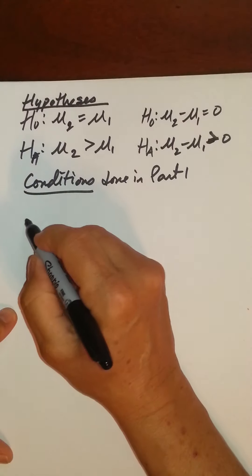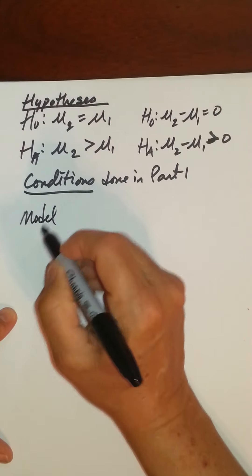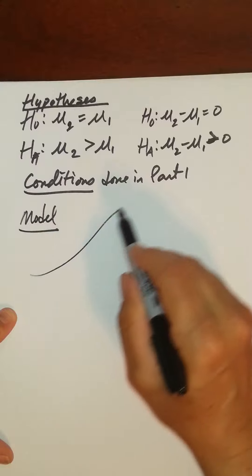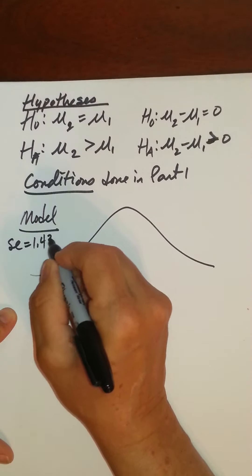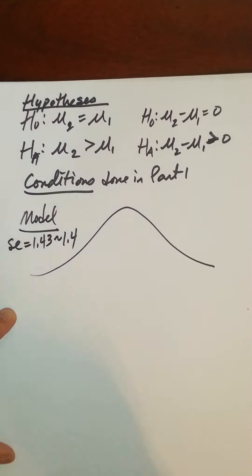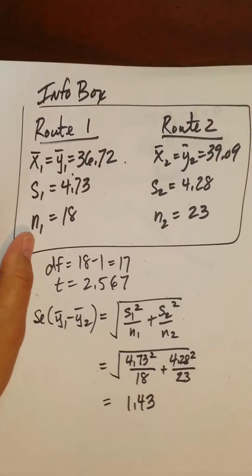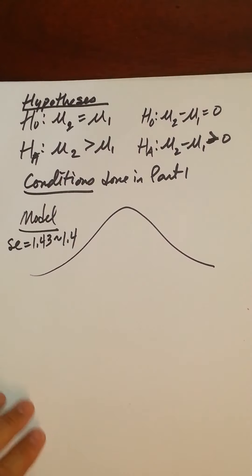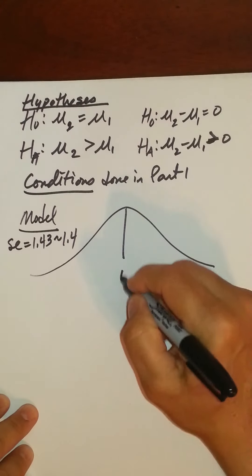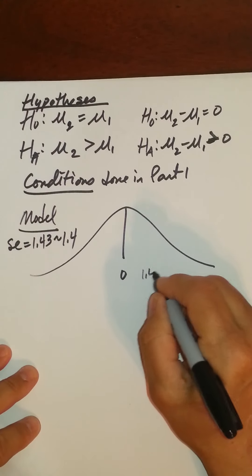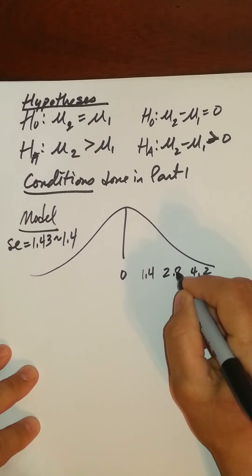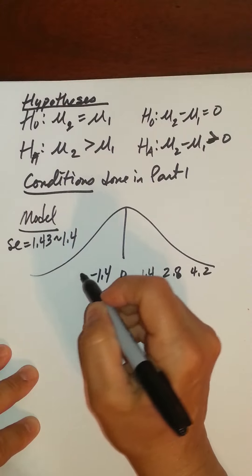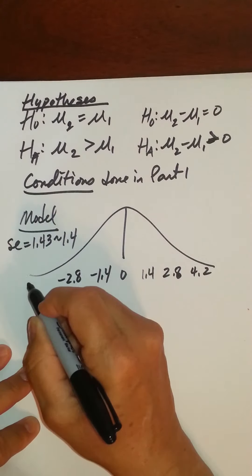Alright, so now we're at the, what I call the model, which is the distribution of expected sample differences. Remember that our standard error was 1.43, which I'll just round to 1.4, remember that came from here, standard error. And now let's go ahead and create this. So we have zero, 1.4, 2.8, 4.2, and then going this way, negative 1.4, negative 2.8, and negative 4.2.